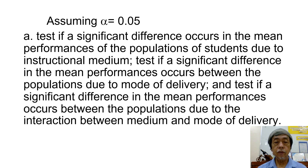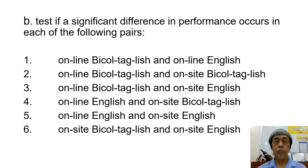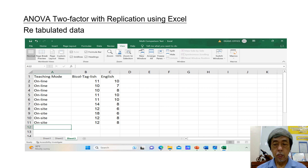Test if a significant difference in the mean performances occurs between the populations due to mode of delivery. And test if a significant difference exists between medium and mode of delivery. Letter B: test if a significant difference in the mean performances occurs in each of the following six pairs. This letter A problem will be solved using ANOVA two-factor with replication, which can be done in Excel.